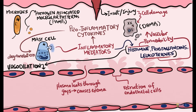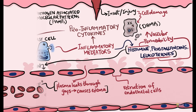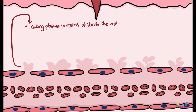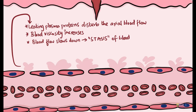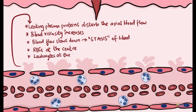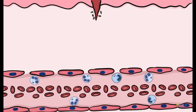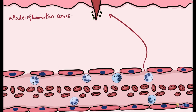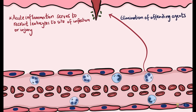This plasma-rich fluid leaking out of the vessel and accumulating in the extravascular space is called an exudate. Leakage of plasma proteins disturbs the axial flow of blood and increases blood viscosity, thereby slowing down or causing stasis of blood flow. This results in red blood cells getting concentrated at the center with leukocytes being pushed to the periphery near the vessel wall. Acute inflammation basically serves to recruit leukocytes to the site of infection or injury in order to eliminate the offending agents and damaged tissue.